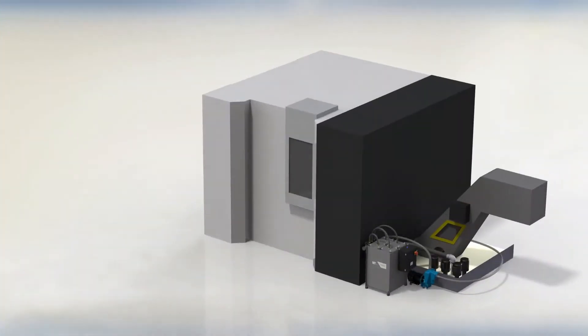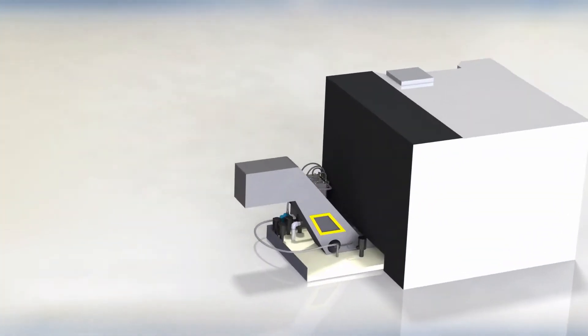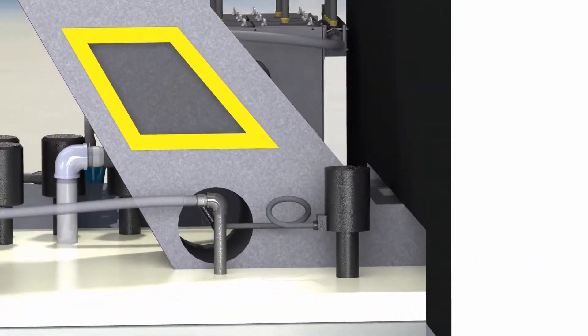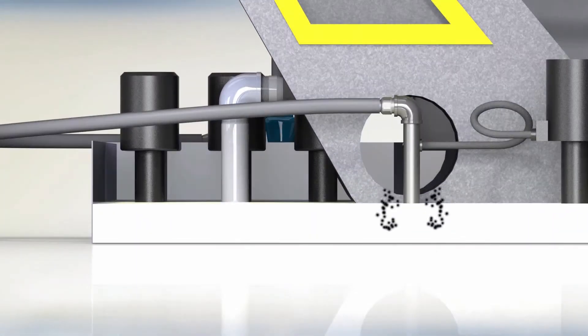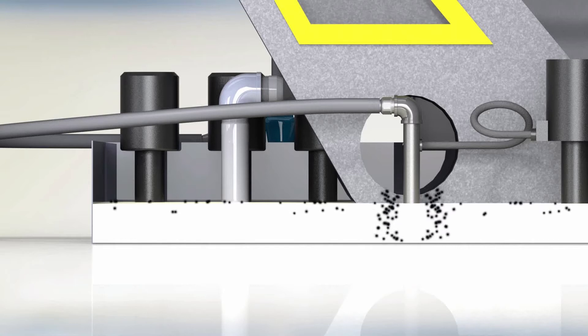The Purge picks up fine particles and chips that get by the filtering chip conveyor before they have a chance to settle at the bottom of your tank and wreak havoc on your machine tool. Here's how it works.